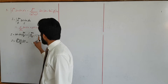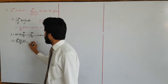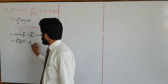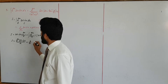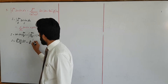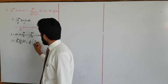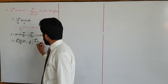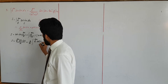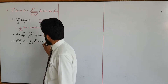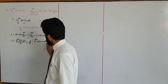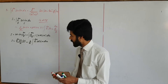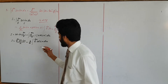Simplify करेंगे तो हमारे पास बनेगा: e to the power ax into sin vx upon a, minus यहां से b common देंगे — b upon a — integral of e to the power ax cos vx dx। अब इसे आगे apply करेंगे integrating by parts।